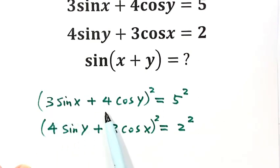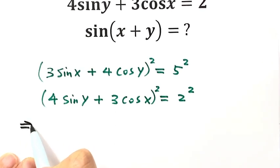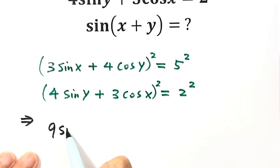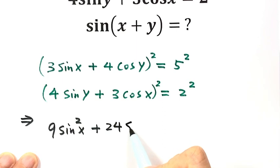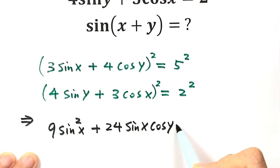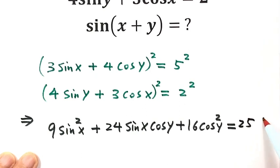Next, let's expand the left-hand side of the first equation. That's 9 sin²x, then plus 2 times 3 times 4 — that's 24 — so 24 sin x cos y, then plus 16 cos²y, then equals 25. Let's label this one as equation 1.